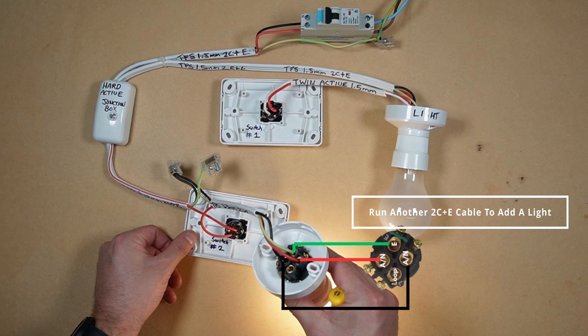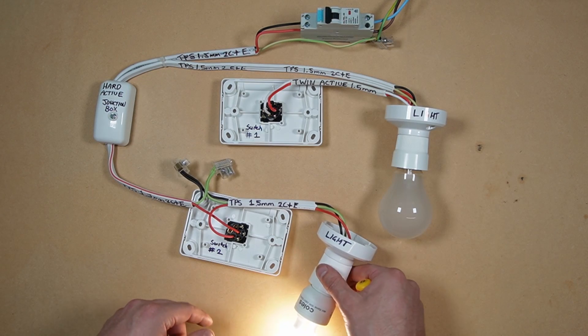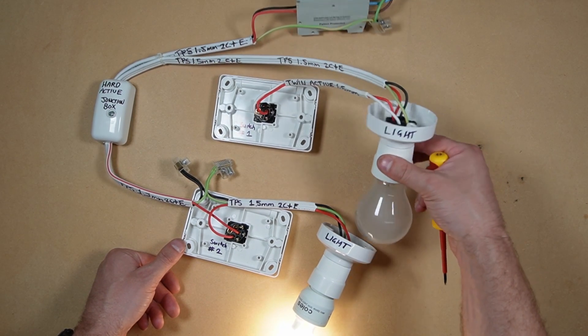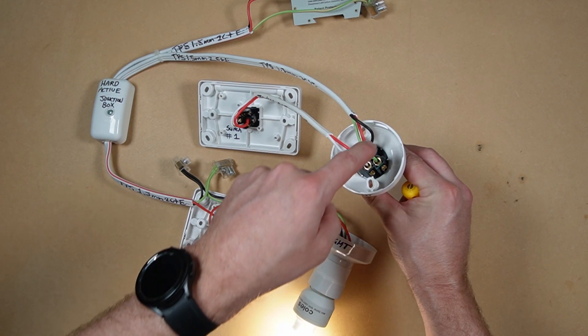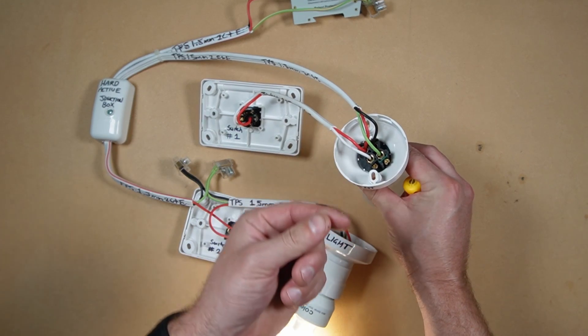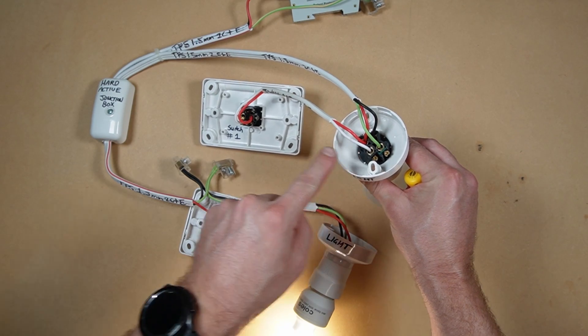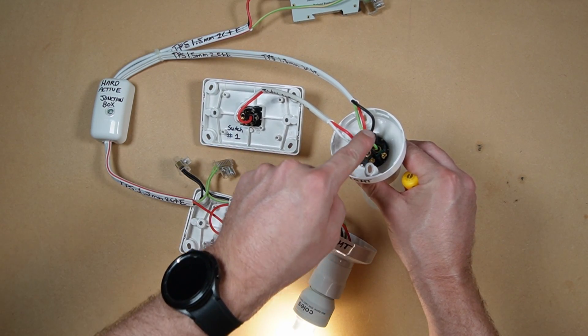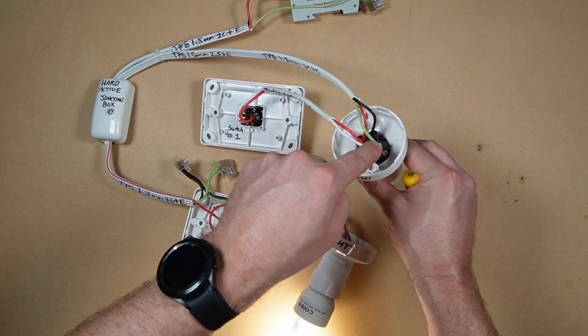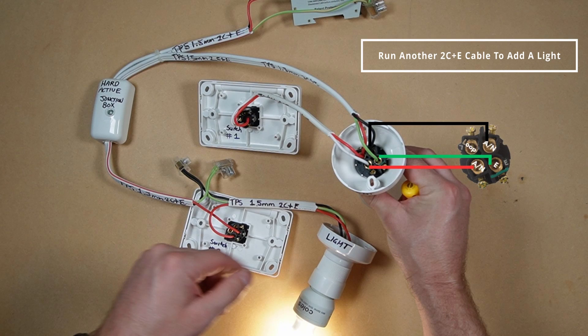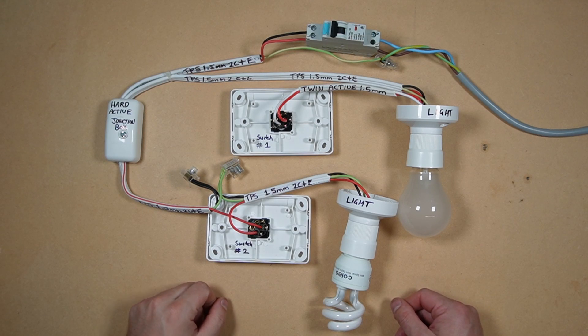Looping at the light method, you would have to join your neutral and earth together and your red from your two-core and earth with your white active conductor from the switch. Join those together—the neutral, earth, and the white with the red active conductor—over to the next light and then just daisy chain just like I did with that one.